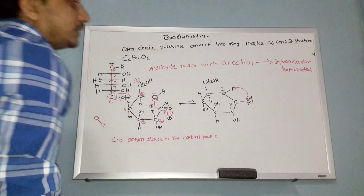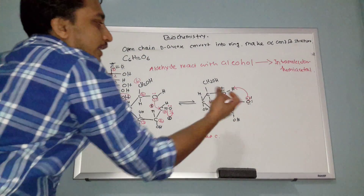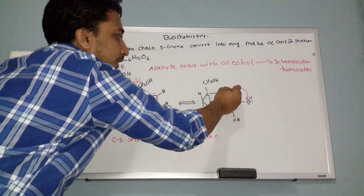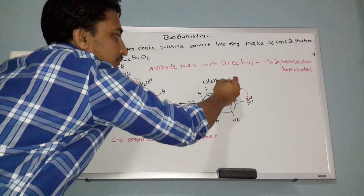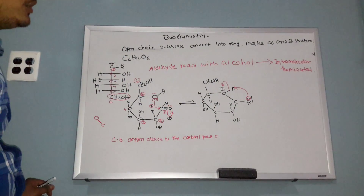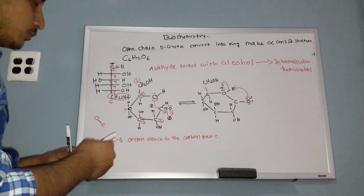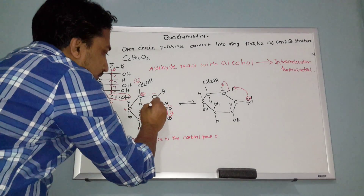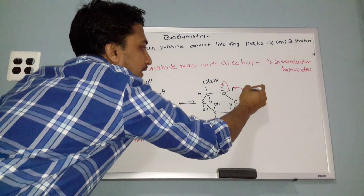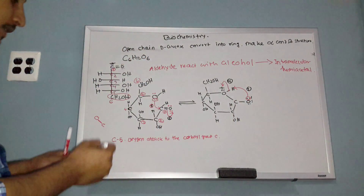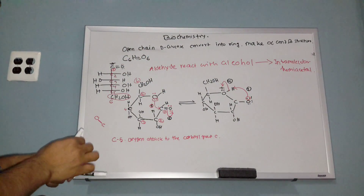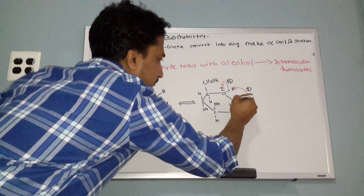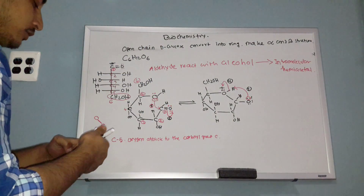When the oxygen becomes negatively charged, it accepts a hydrogen. This gives us motion three and motion four — the negatively charged oxygen picks up a hydrogen, completing the ring closure. So altogether we have four motions: the lone pair attack (1), the double bond breaking (2), charge formation (3), and hydrogen acceptance (4).